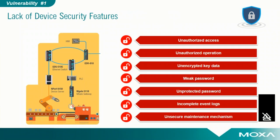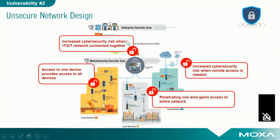Let's dive a little deeper on that first vulnerability — the lack of device security features. When we look at this challenge, we see many potential security holes with legacy network equipment. There are many areas of concern around unauthorized access, insecure configuration and password protections, weak password strength, and an inability to log security events. Referring back to the earlier slide where 28% of the 2016 incidents didn't have a known threat vector — in many cases, that's because of the lack of adequate logging of security events. Without these basic security features, any of the end devices could be a weak point of the network.